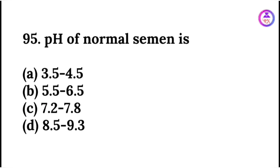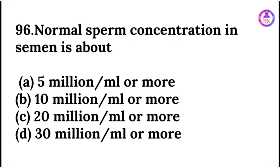The pH of normal semen is 7.2 to 7.8. Normal sperm concentration in semen is 20 million per ml or more.